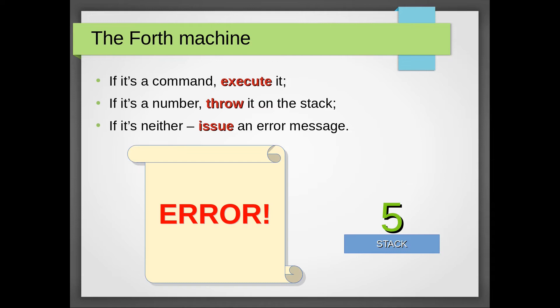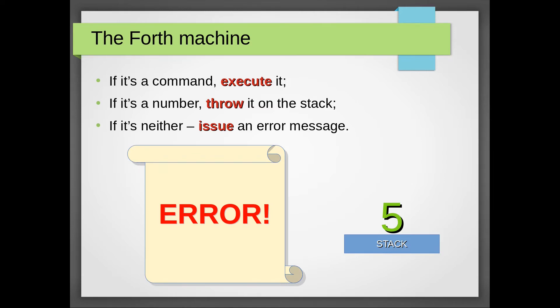And let's elaborate on that by introducing you to two simple Forth commands. Plus, which takes two numbers from the stack, adds them and places the sum on the stack. Dot, which takes a number from the stack and displays it. Now consider this: five, seven, plus, dot.